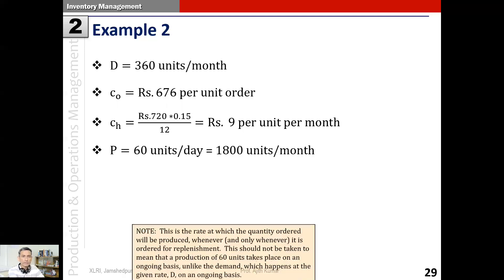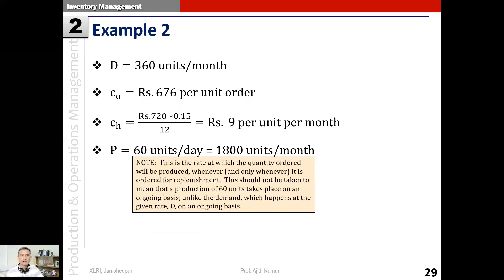The production rate p is 60 units per day, or 1800 units per month. It's important to clarify that this rate refers to how fast the ordered quantity is produced whenever it is ordered for replenishment - it should not be taken to mean that production of 60 units happens on an ongoing basis. Unlike demand d which is ongoing, p refers to production that happens only when an order has been placed, occurring at this given rate.